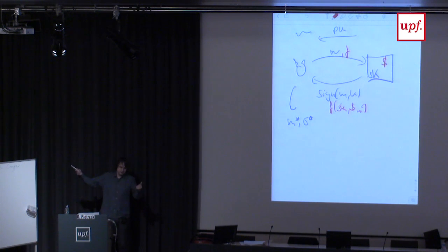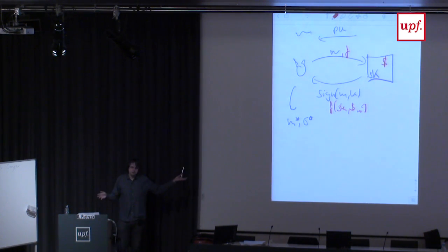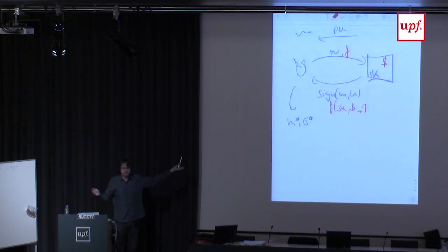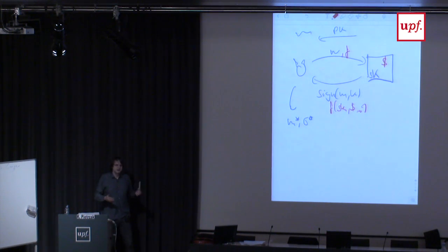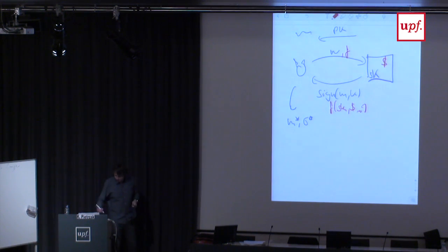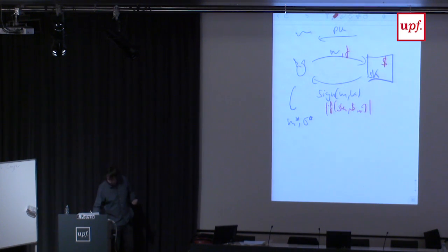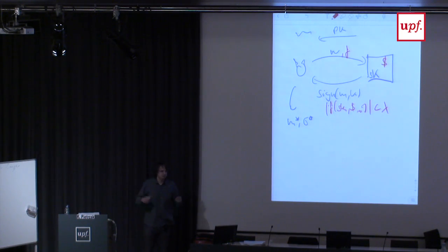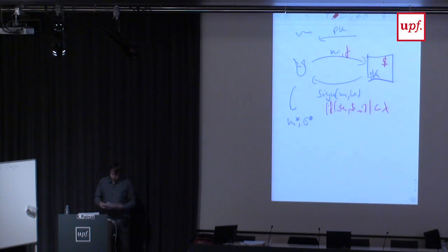We don't want to make assumptions about what F is — in provable security we don't assume specific attack types, we just assume polynomial running time. Here we similarly don't assume what F is, but let's bound something. Let's assume the capacity of the channel is bounded — equivalently, the length of the output of the leakage function is not too high: say with every signature, the adversary gets at most 100 bits of side channel information.